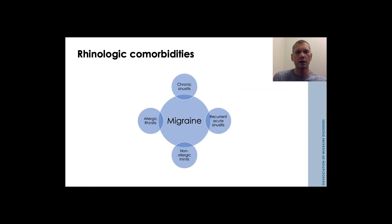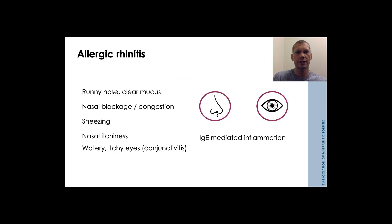In my practice, I spend a lot of time sorting through rhinologic comorbidities in migraine. Some patients primarily have migraine presentations, but many have overlapping common conditions including rhinitis — both allergic and non-allergic — chronic sinusitis, or recurrent acute sinusitis. Allergic rhinitis is a condition of IgE-mediated inflammation caused by an allergen, causing runny nose, clear mucus, nasal blockage, congestion, sneezing, itchiness, and watery itchy eyes. Many of these symptoms overlap with what we see in mid-facial migraine.